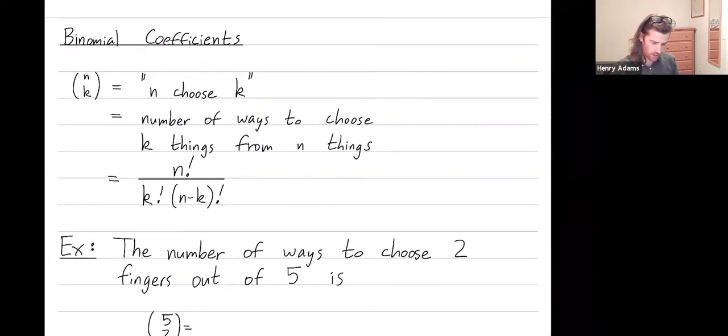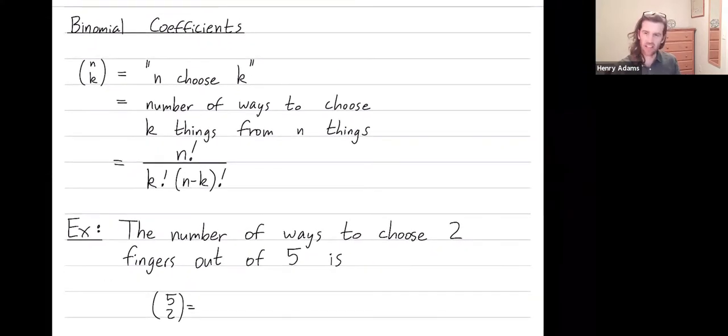So let's try this formula on five choose two and confirm that we get the same answer. So five choose two if we trust this formula it should be five factorial divided by two factorial times five minus two factorial so that's three factorial because five minus two is three. And then we want to cancel things when we try to compute this. You don't want to multiply five factorial out and get a large number. You instead want to find things that cancel.